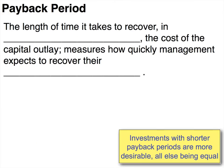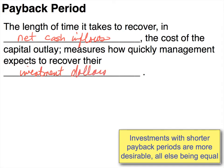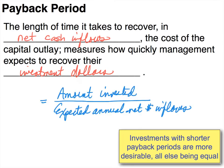Let's start by defining what the payback period is. The payback period is the length of time it takes to recover, in net cash inflows, the cost of the capital outlay — simply what you invested, what you paid for it. It measures how quickly management expects to recover their investment dollars. The formula is the amount invested in the asset, or the cost of the asset, divided by the expected annual net cash inflows of the asset.